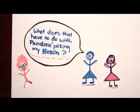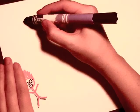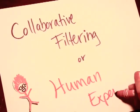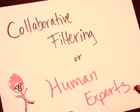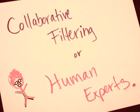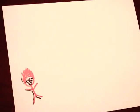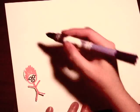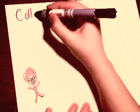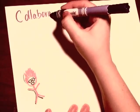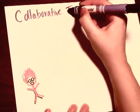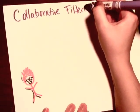What does that have to do with Pandora picking my brain? The two main methods used for recommendation networks are collaborative filtering or human excellence.